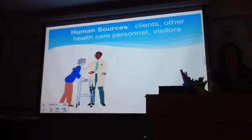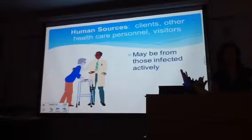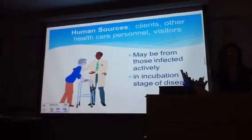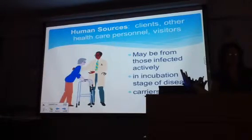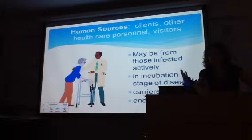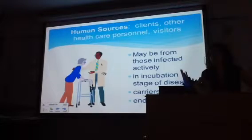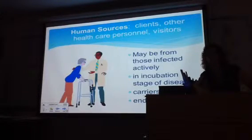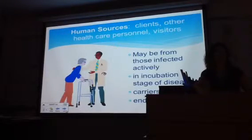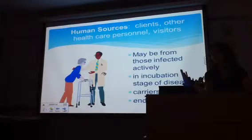Human sources of infection include clients, other healthcare personnel, visitors, and those infected actively in an incubation stage — they can be carriers. For example, when the flu virus is rampant in a community, skilled nursing facilities will close to visitors and will not admit new patients. This is called a moratorium. It's important that we educate visitors — if someone has a runny nose and is coughing, educate them on the damage they can do by visiting a nursing facility or hospital.